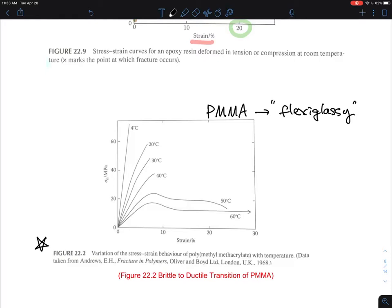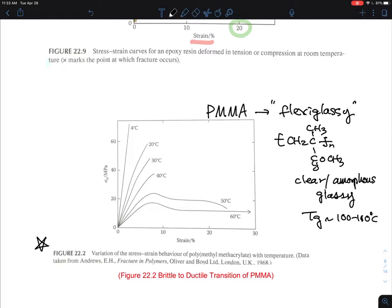And PMMA, you can see the chemical structure is CH2, CH3, COO, CH3. That's PMMA chemical structure. And it's an amorphous clear, clear amorphous glassy polymer. And its Tg is around 100 to 110 degrees C. And it's widely used. And when you just do the tensile mode at room temperature, this is stress. And that's strain. And you'll see that 20 degrees, 30 degrees, 40 degrees. So those temperatures, which is around the room temperature, quote-unquote room temperature, in the vicinity of the room temperature, this is a typical behavior of a glassy brittle polymer.